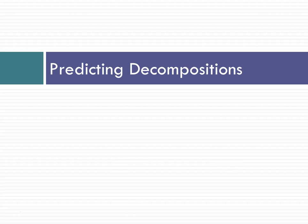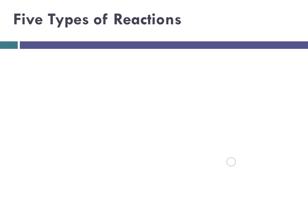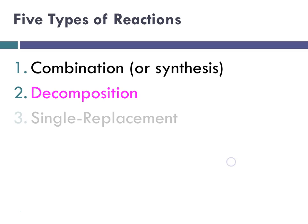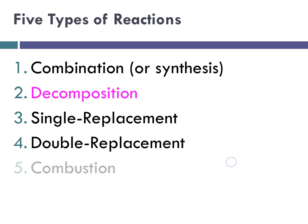So, we're predicting decompositions. The five types of reactions — recall — are combination or synthesis, decomposition (which is what we will talk about today), and then single replacement, double replacement, and combustion. The others were all covered in tutorials.